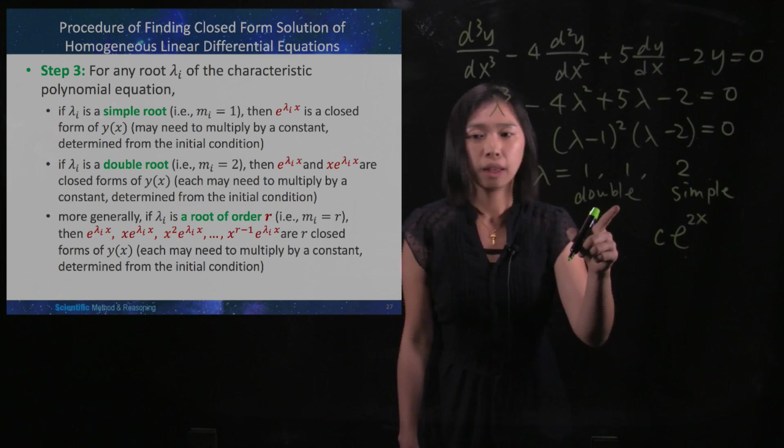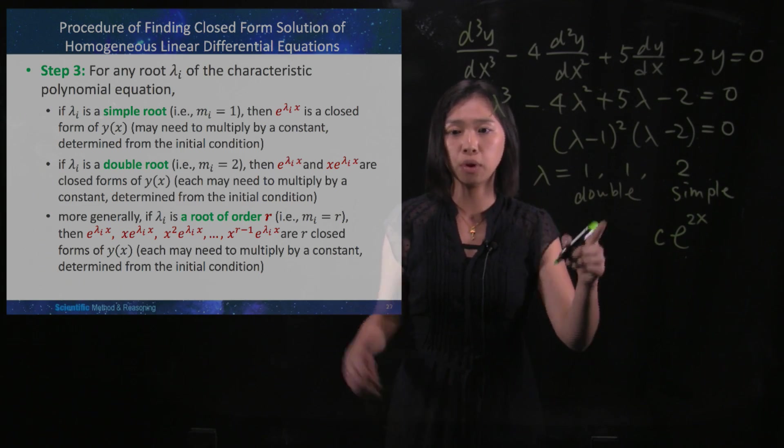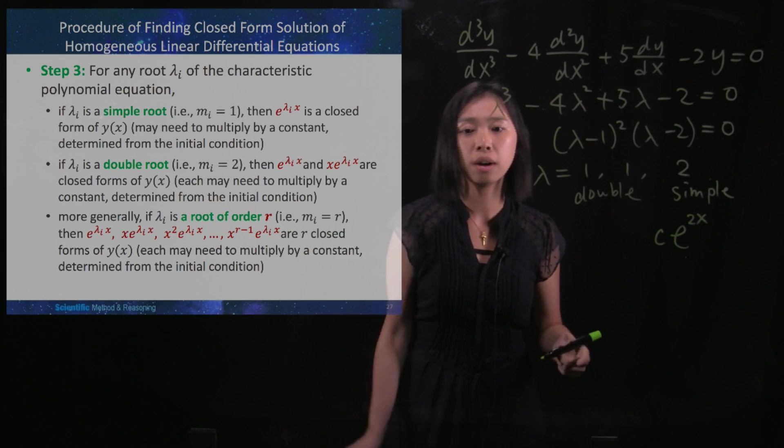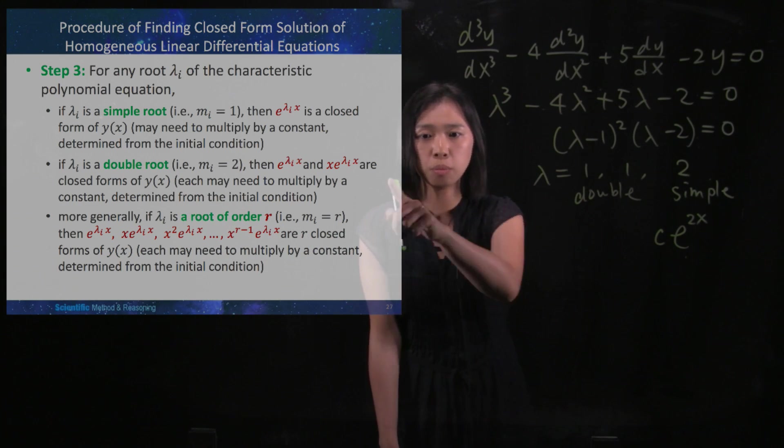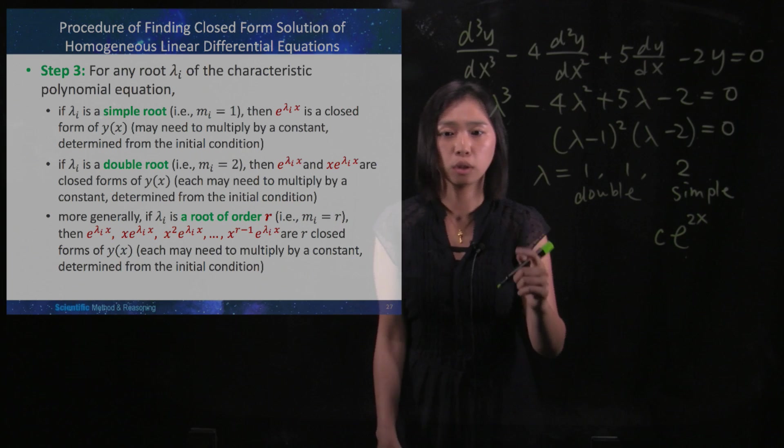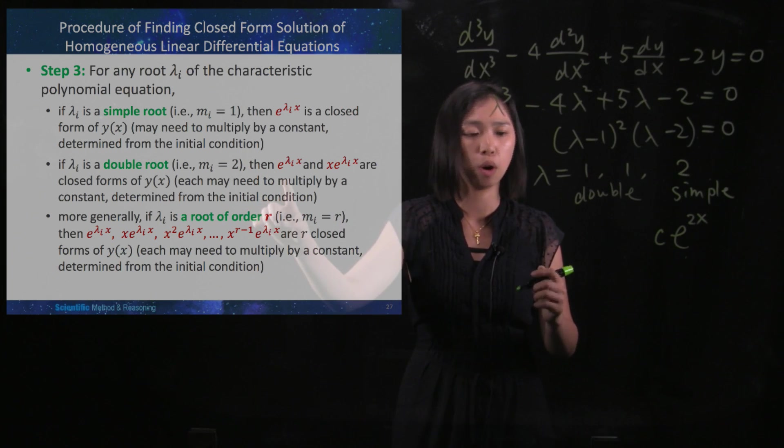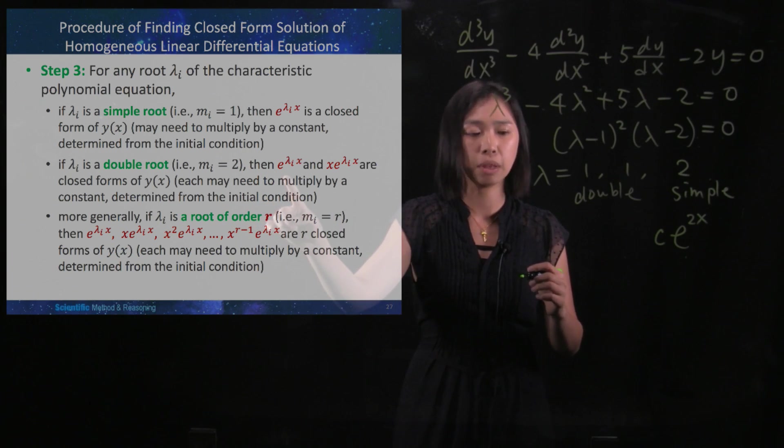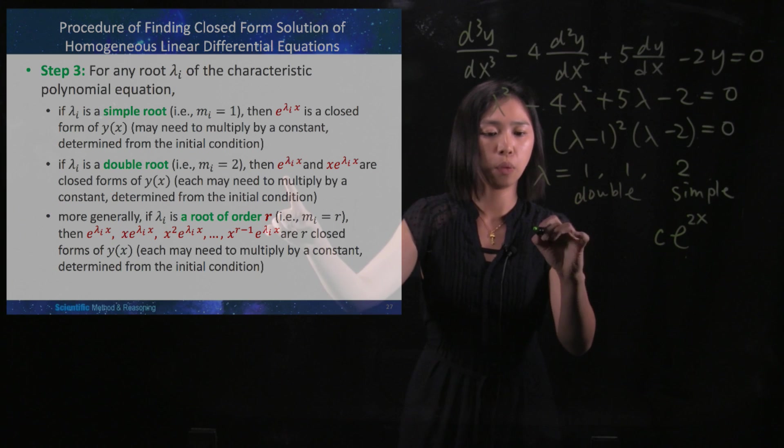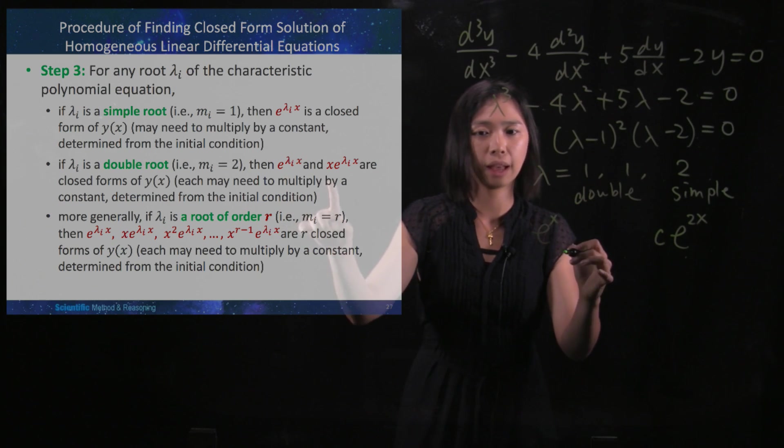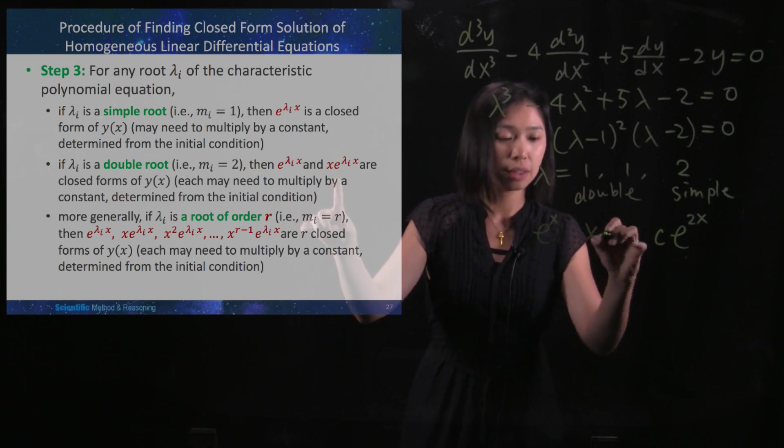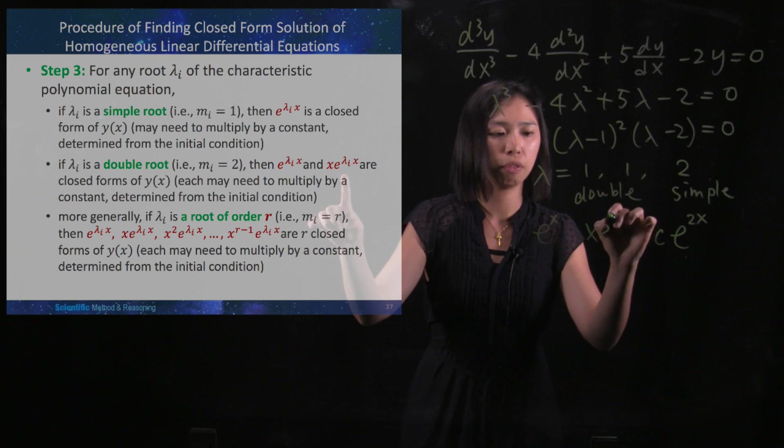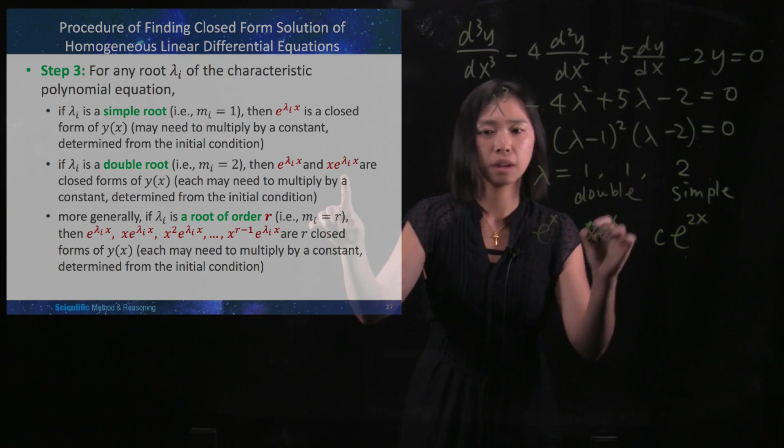Here we got the double root, so referring to here, we will have two more closed forms of y. The first one would be e^(λx). This λ is 1, so I will have e^x. And then I will also have xe^(1x).